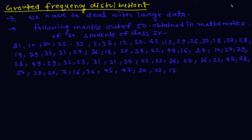Now, if we make a frequency distribution table for each observation, the table would be too long. So for convenience, we make groups of observations: 0 to 10, 10 to 20, and so on, and obtain a frequency distribution of the number of observations falling in each interval or group.